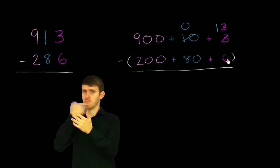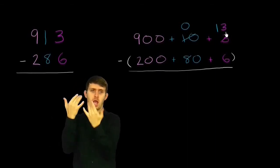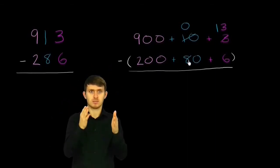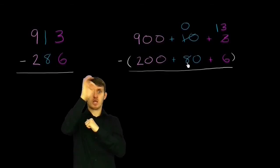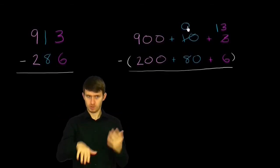Now this solved the problem for the ones place. I can now subtract 6 from 13. But it made the problem in the tens place even worse. I now have to subtract 80 from 0. What do I do?